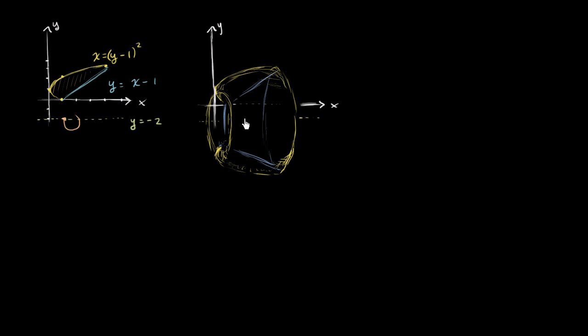You can actually approach this with either the disk method or the shell method. In the disk method, you would create disks that look like this, and you would be integrating with respect to x. You would have to break up the problem appropriately because you have a different lower boundary. You would have to break this up into two functions, an upper and lower boundary for this interval in x, and then a different one for that interval in x. But you could use the disk method.